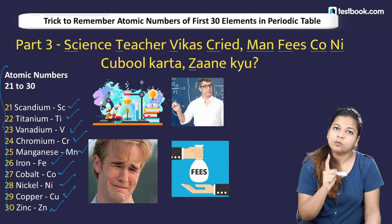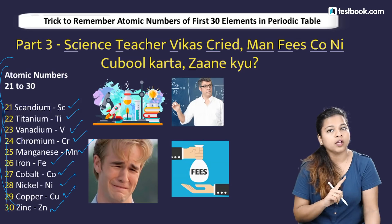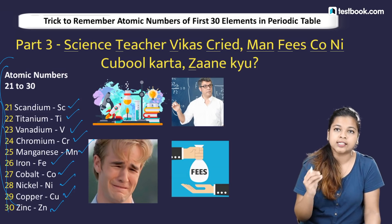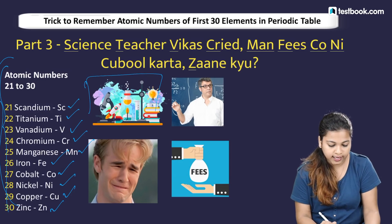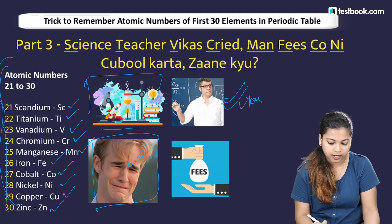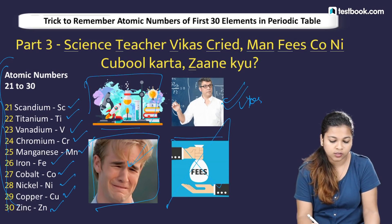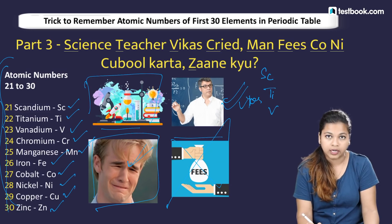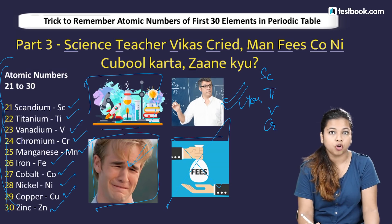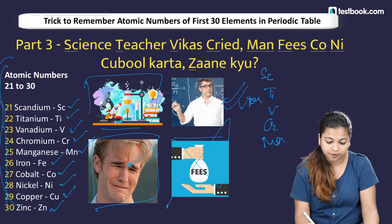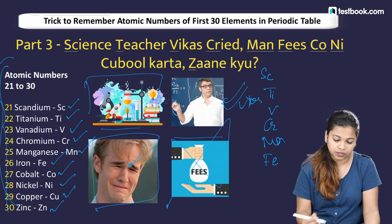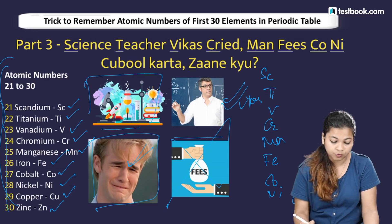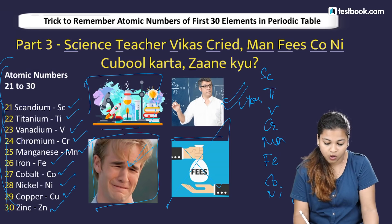This is the same group as the d-block periodic table. Breaking it down: SC (Science) = scandium (21), T (teacher) = titanium (22), V (Vikas) = vanadium (23), CR (cried) = chromium (24), Mn (man) = manganese (25), Fe (fees) = iron (26), Co (cannot) = cobalt (27), N (nickel) = 28, Cu (Cuprum) = copper (29), ZN (zinc) = 30.